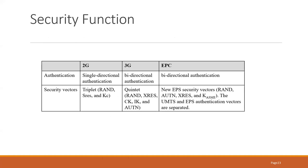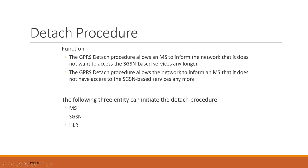In 2G we had triplet, in 3G we had quintuplet, and in EPC we had four authentication keys. In 2G authentication was single direction, in 3G it was bidirectional. Then we looked at the detach procedure and discussed that there are three ways in which a user can get detached: via the MS itself, via the SGSN, and via the HLR.